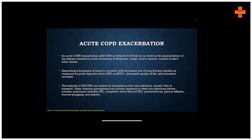Acute exacerbation is very common. GOLD defines it as an event in the natural history of the disease, marked by acute worsening of dyspnea, cough, and/or sputum outside of one's daily variation. The causes for this exacerbation may be many — it could be seasonal change, a viral infection, a pneumonia, a bacterial infection, or a lot of other things. This frequency is found to correlate with increased rate of lung function decline.